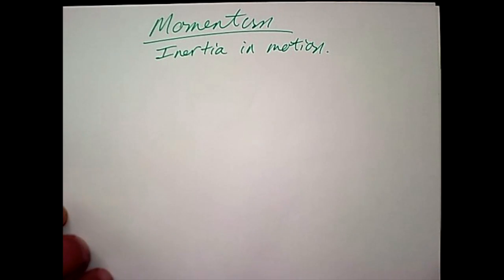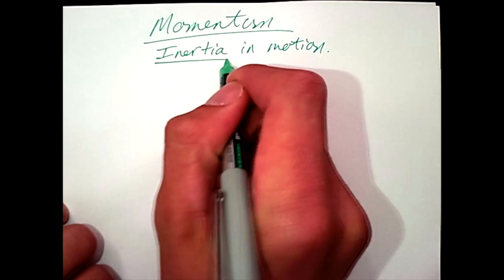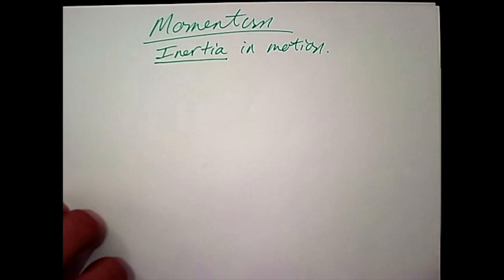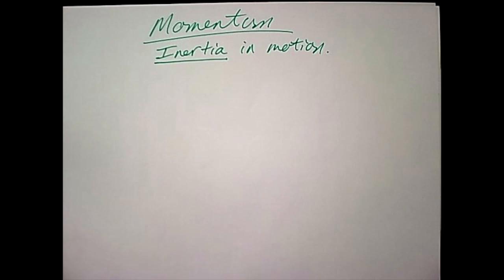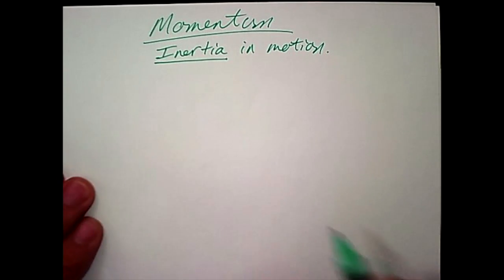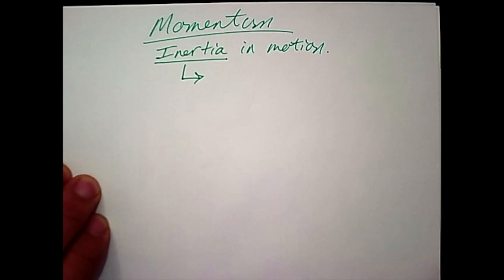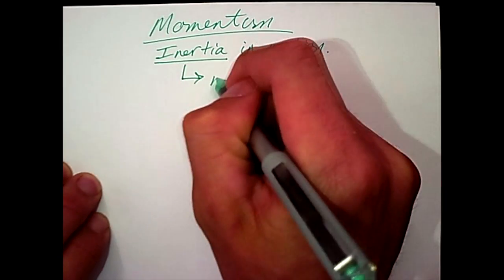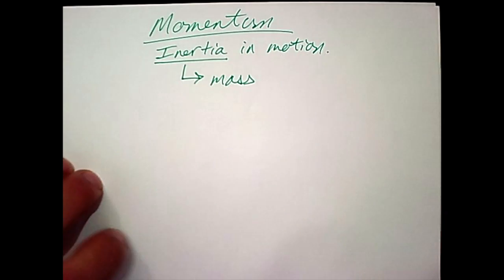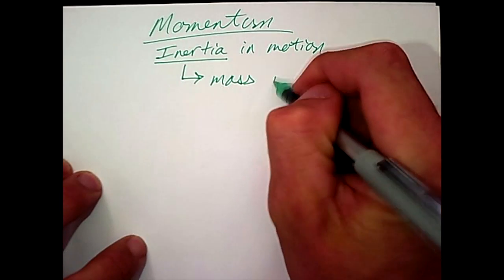So the first thing is that momentum is inertia in motion. Moreover, inertia itself is simply the tendency of an object to keep doing what it's doing. But more importantly, the reason why it does that is because an object has mass. And so in the most simplest terms, inertia is mass.